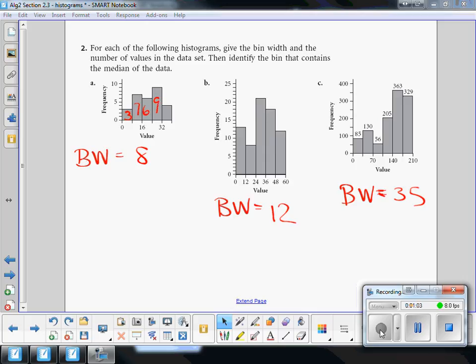9, and then finally 6. So it looks like we have 10, 25, plus 6 makes 31 values.